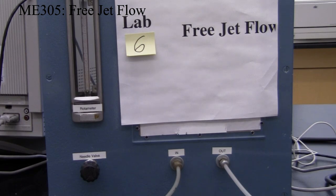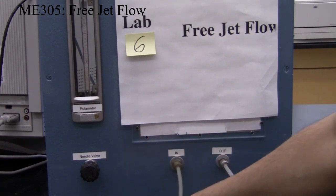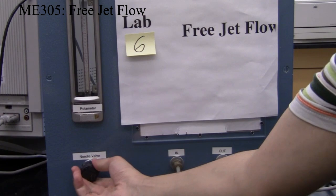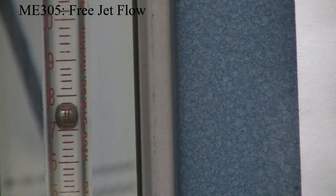The air is on now. Let's set the airflow using the needle valve on the rotometer. Set the flow at 7.5. The center line of the ball should be at 7.5.